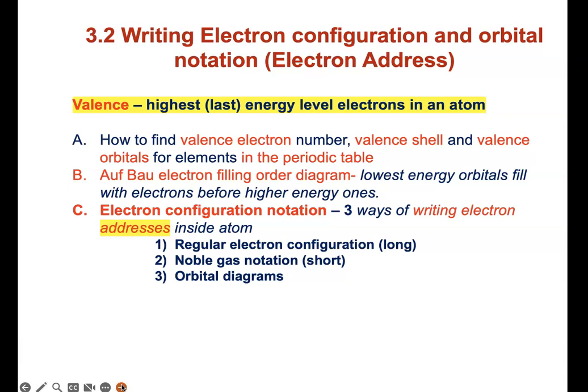First, you have to learn a new word called valence. It means the highest or last energy level electrons in an atom. We will also look at how to find the valence electron number, the valence shell, the energy level where the valence electrons live, and the valence orbital or the valence subshell where these valence electrons live for a given element in the periodic table.